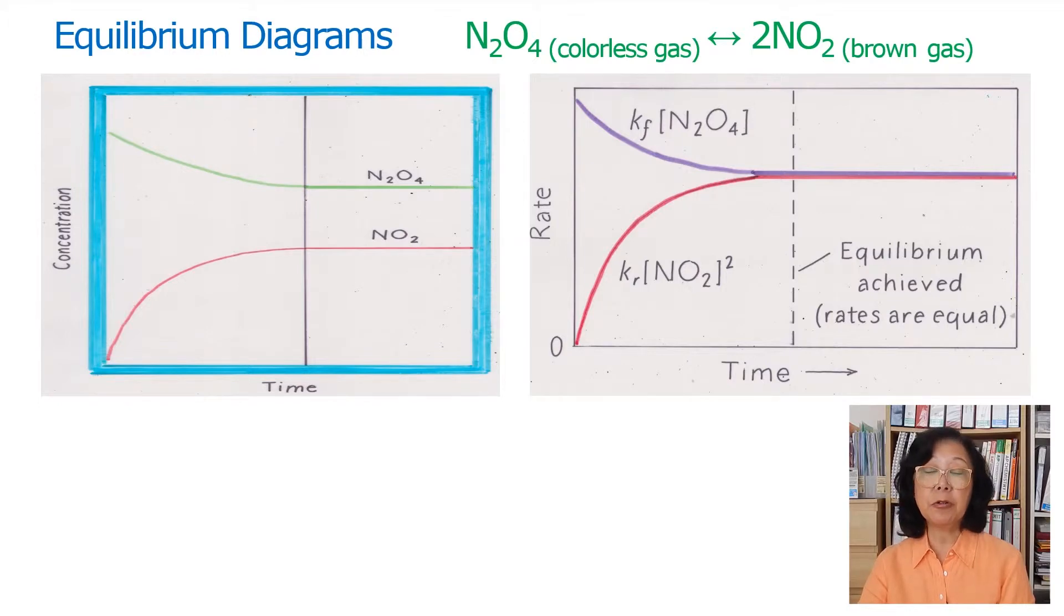As more NO2 is made, then the reverse rate will pick up. Eventually, they come to the same rate and equilibrium is reached.